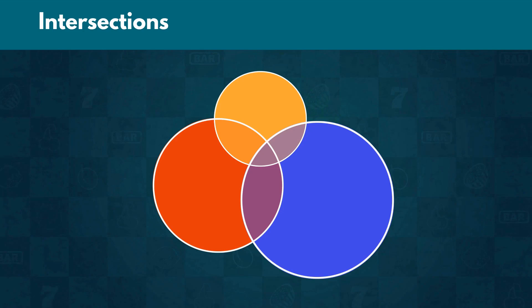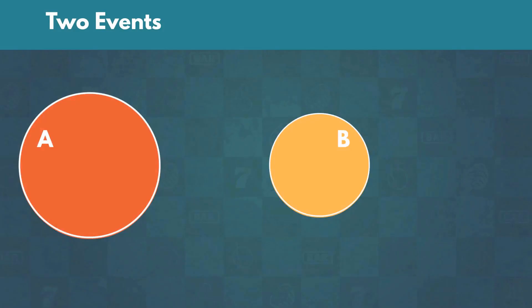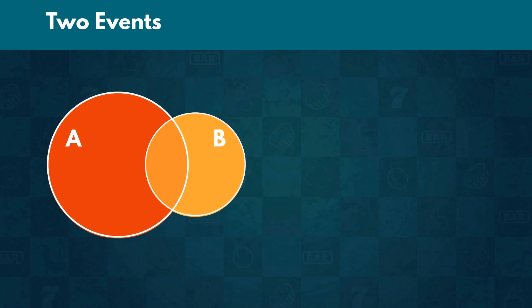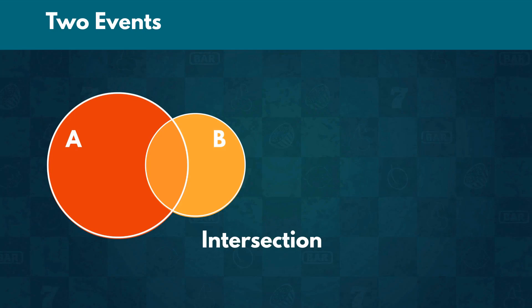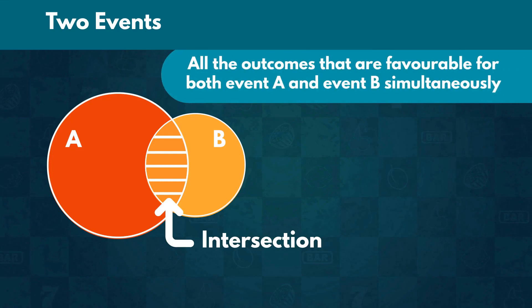In this video, we are going to introduce you to the notion of intersections. Let's start with the intersection of two events. When we want both A and B to happen at the same time, we are talking about their intersection. Graphically, the intersection is exactly as the name suggests — the area where these events intersect. It consists of all the outcomes that are favorable for both event A and event B simultaneously, and we denote it as A intersect B.